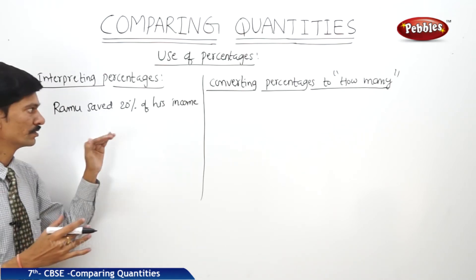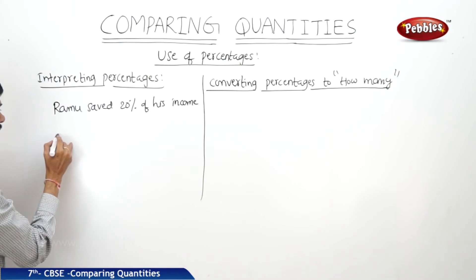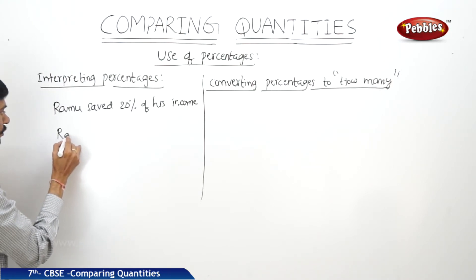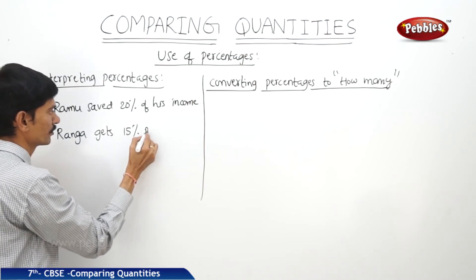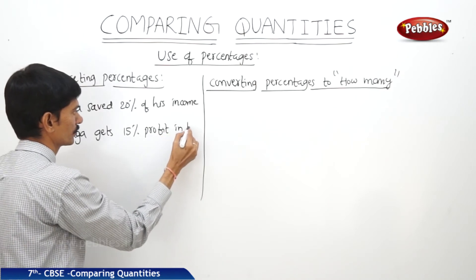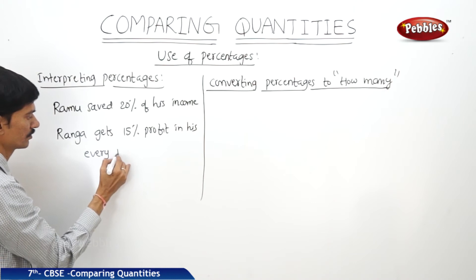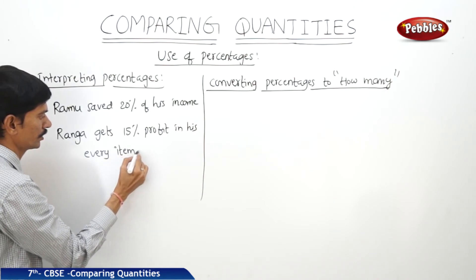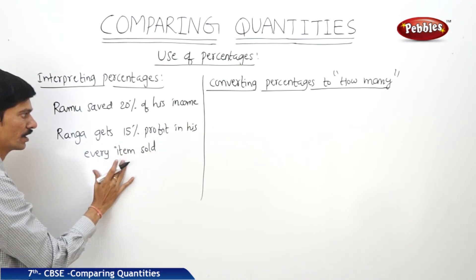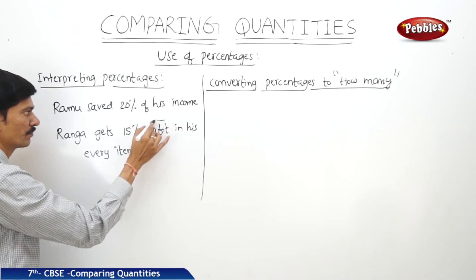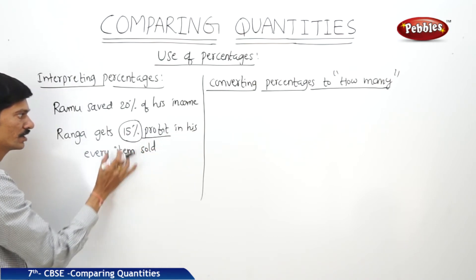If you are saving 20% of your income, that gives you the saved amount. For example, Ranga gets 15% profit in his business. Here also we are using the percent symbol — 15% — to mention his profit. In many ways, we use percentage in our day-to-day life.